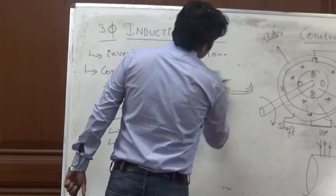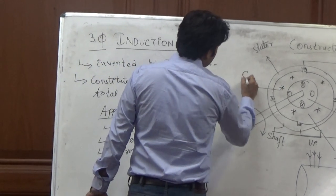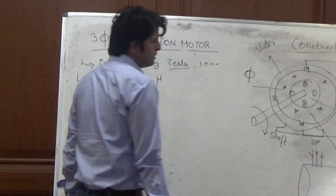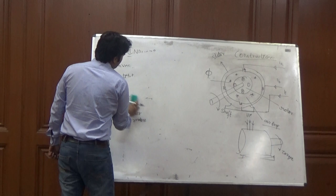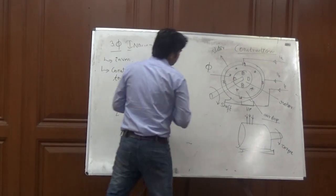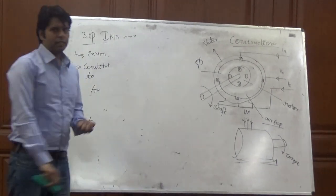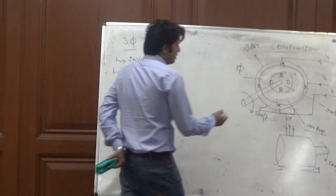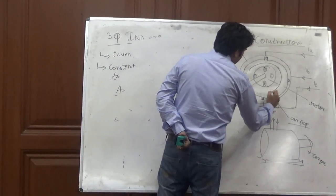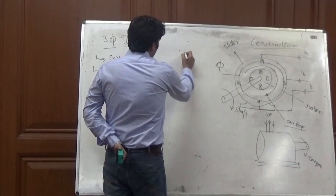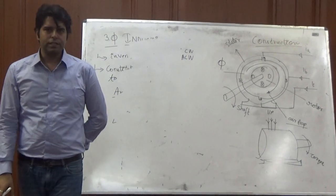So when a 3-phase supply is given to the stator, a magnetic flux is generated inside this area. The property of this flux is very special, and is that this flux rotates inside the area. It is not like a single-phase flux or a DC flux. This flux is different from that, as it rotates inside the air gap in clockwise or anti-clockwise direction depending upon the type of connection given.